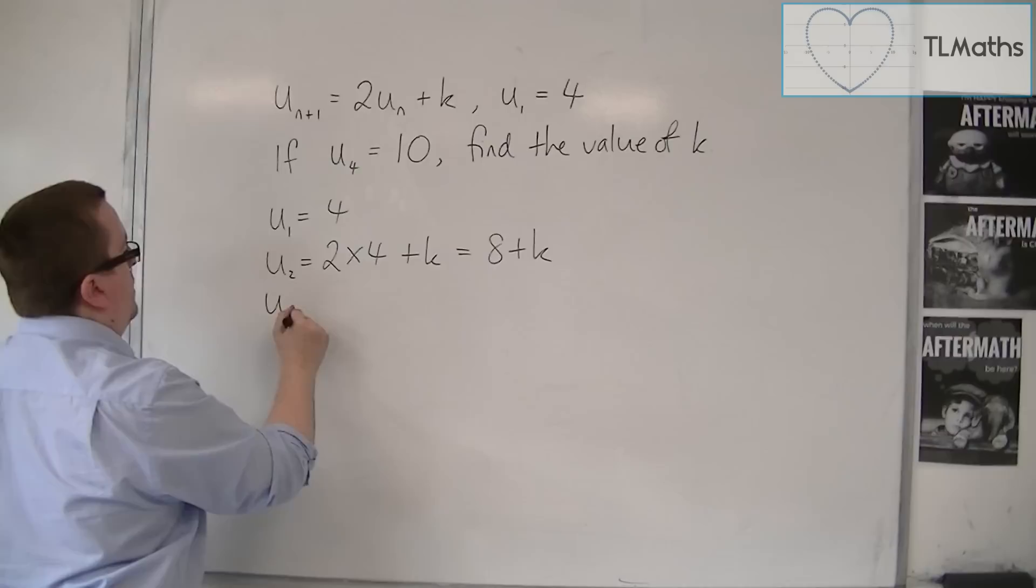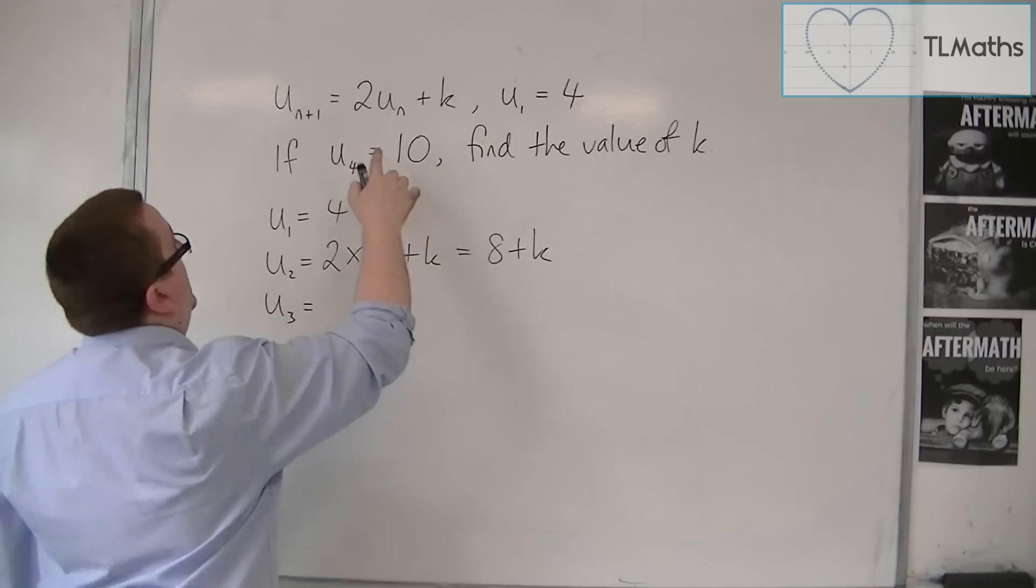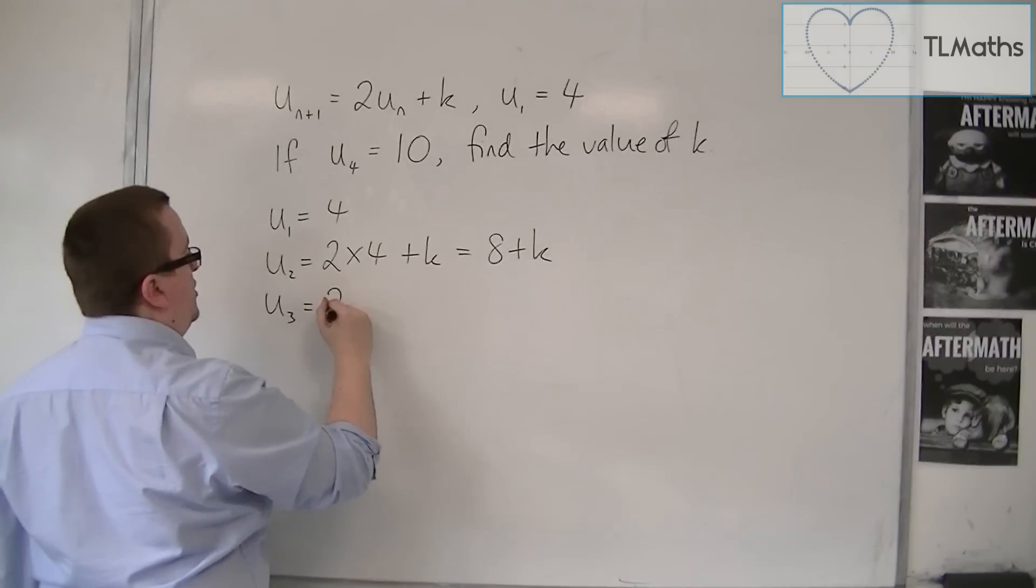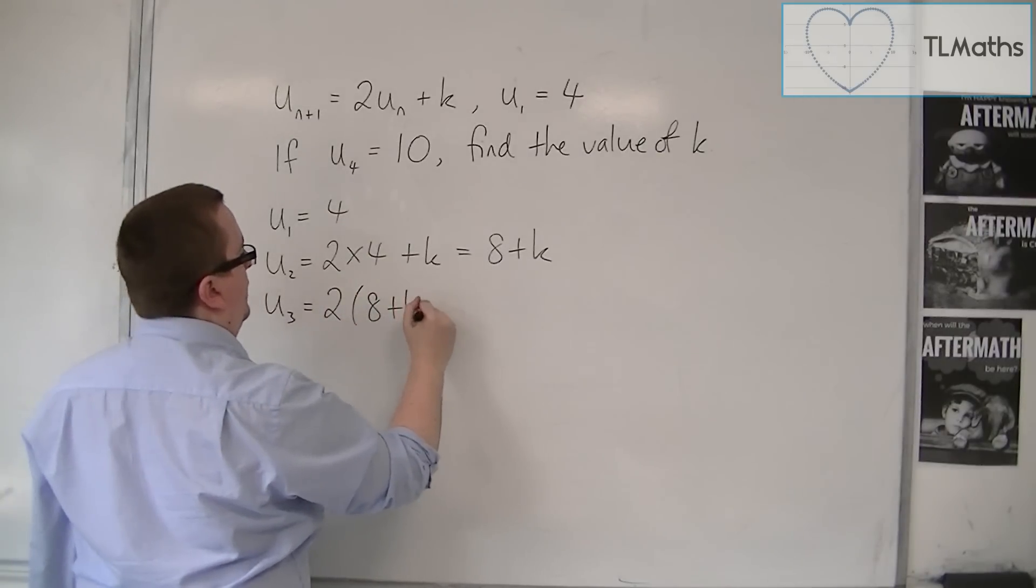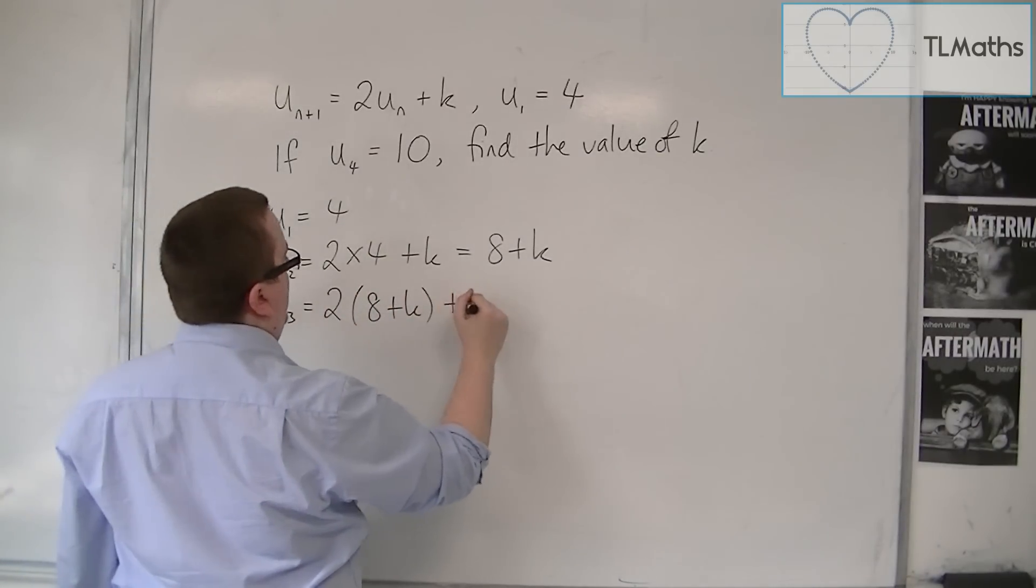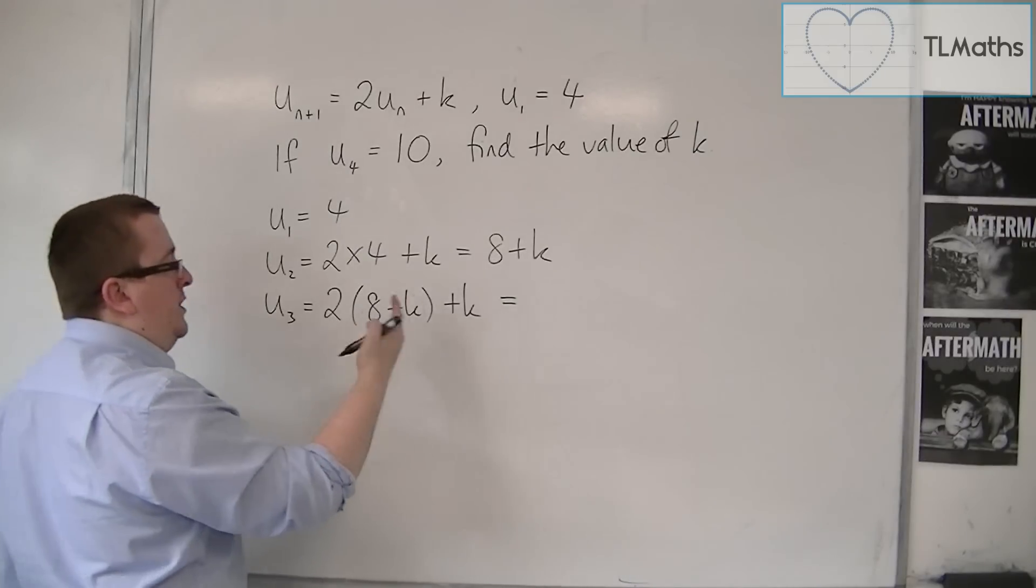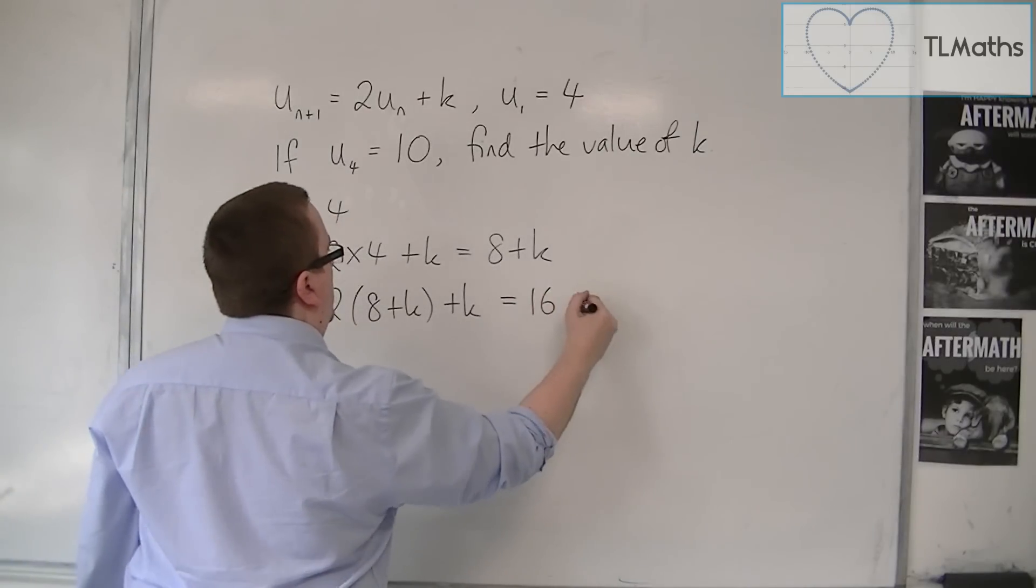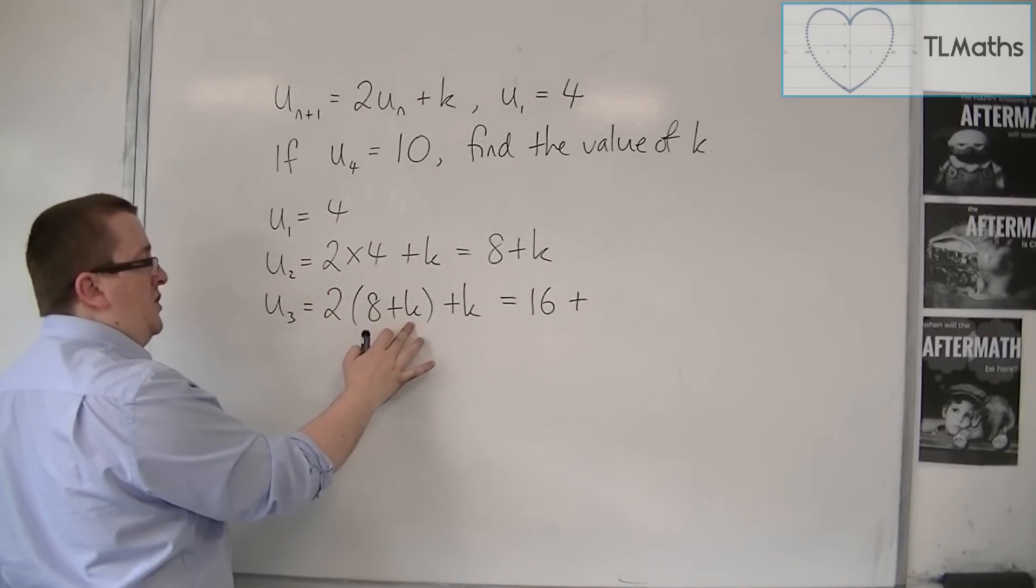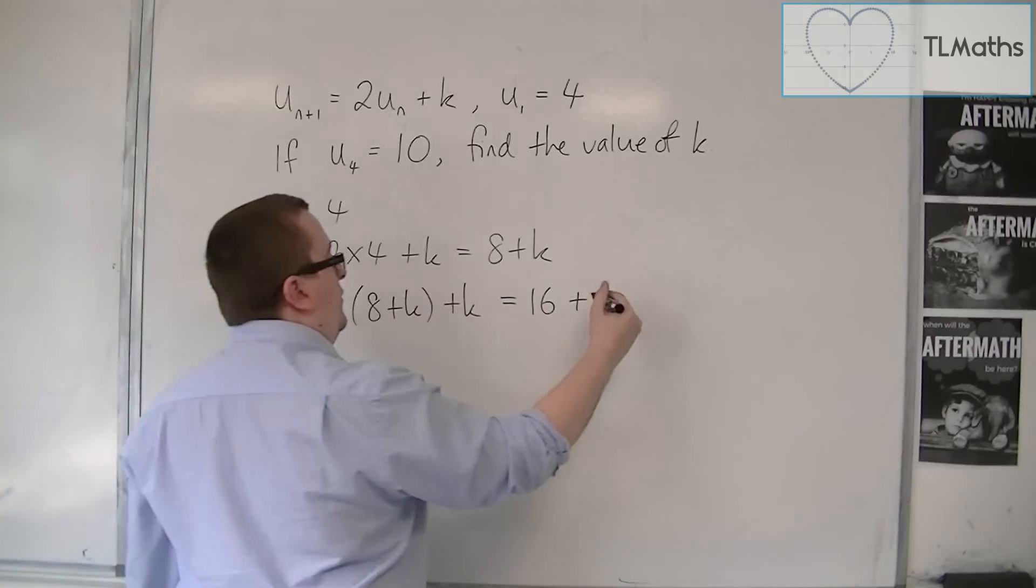Then, for u3, we're going to have 2 lots of the previous term, so 2 lots of 8 plus k, plus k. So we're going to get 2 lots of 8, which is 16, plus 2 lots of k, so 2k, plus another k, so 3k.